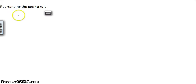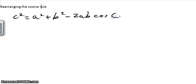We've already seen that the cosine rule can be written as c squared equals a squared plus b squared minus 2ab cosine c.